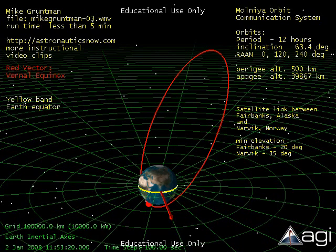The orbit in our example is elliptical with a period of 12 hours, perigee altitude 500 km and apogee altitude 39,867 km.